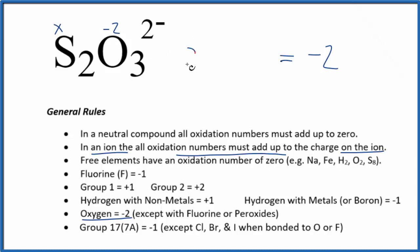We could say 2 times x, 2x, plus 3 times minus 2, minus 6, equals minus 2. So 2x equals, add 6 to both sides, we get a positive 4.